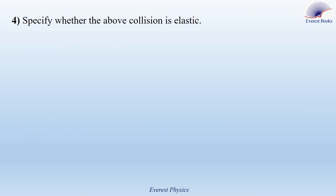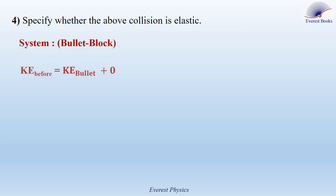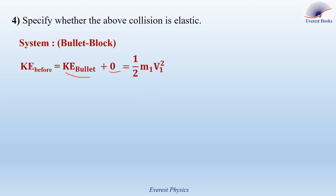Part 4: Specify whether the above collision is elastic. To determine this, calculate the kinetic energy of the system before and after collision — if they are equal, the collision is elastic; if not, it is inelastic. KE before equals KE bullet plus 0, since the block is initially at rest. KE bullet before collision equals one half M1 V1 squared, where V1 is 600 m/s and M1 is 0.05 kg. The kinetic energy of the system before collision is equal to 9,000 joules.